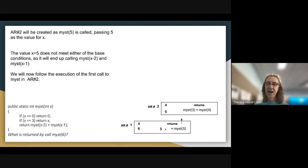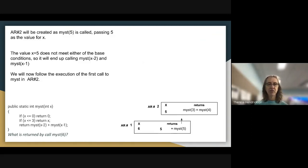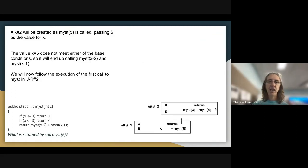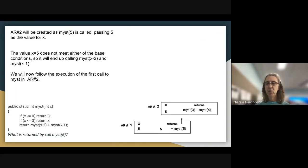The call to MIST(5) creates activation record 2 with the value 5 being passed for X. X=5 doesn't meet either of the base conditions, so it's going to end up calling MIST(X-2), which is MIST(3), and MIST(X-1), which is MIST(4). We'll follow the execution of the left-hand side first, completing MIST(3) to its end.